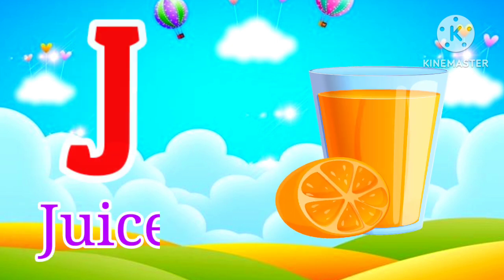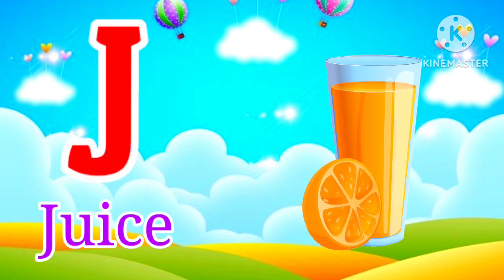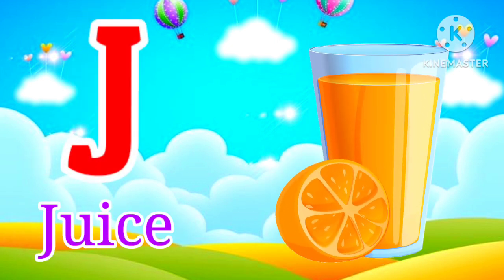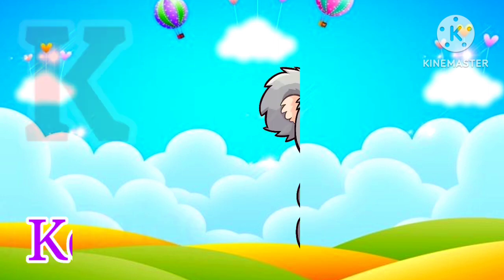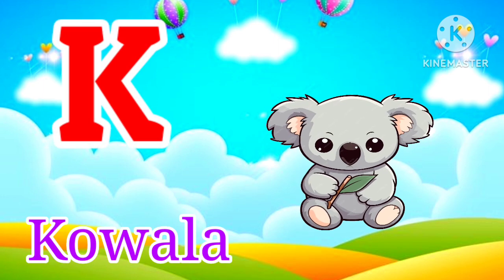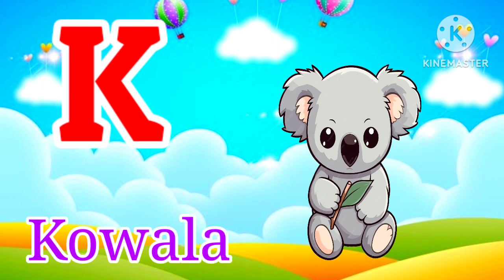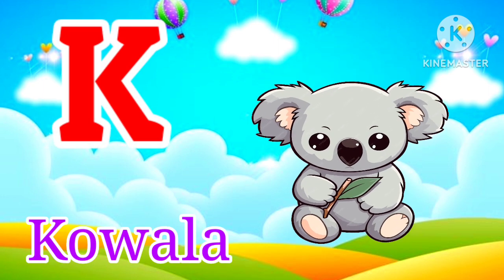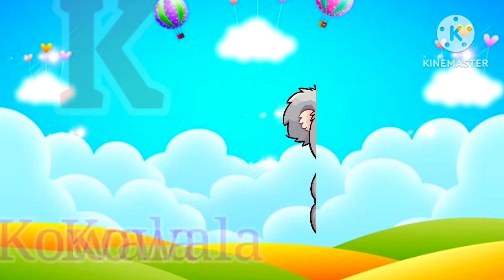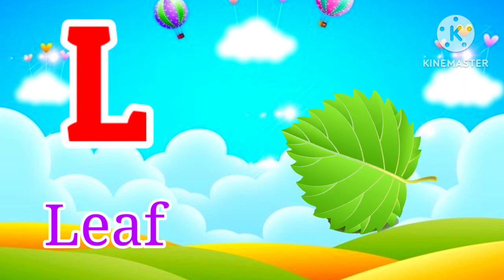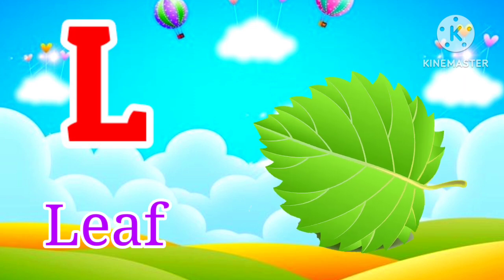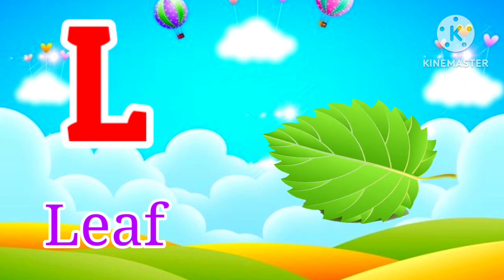J for Juice. Juice means Juice. K for Kuala. Kuala means Kuala. L for Leaf. Leaf means Patty.